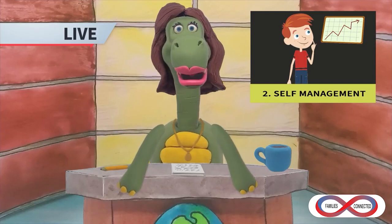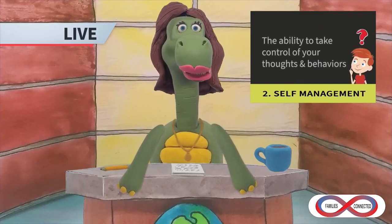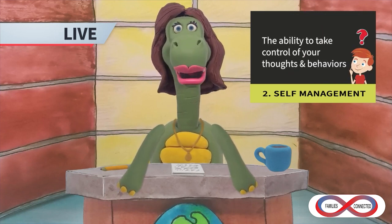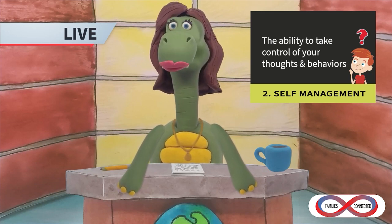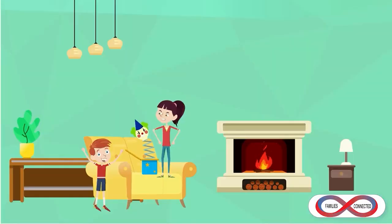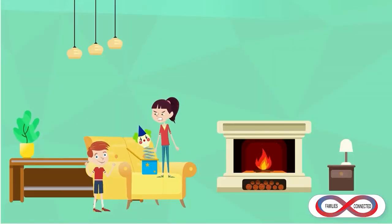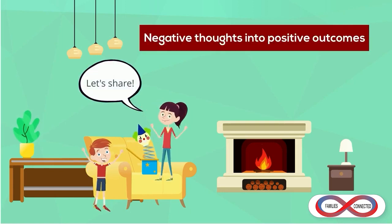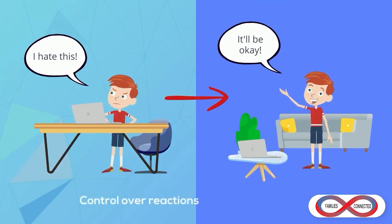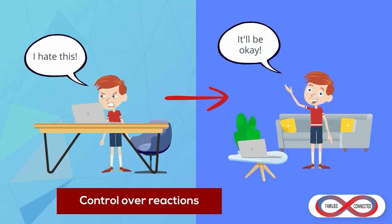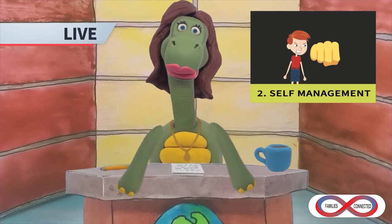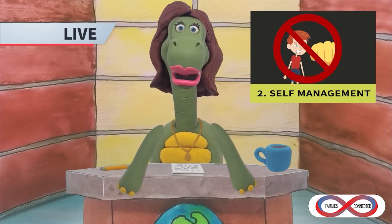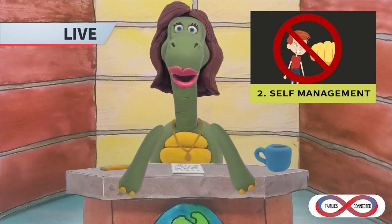Number two: self-management. Self-management is the ability to take control of one's thoughts, emotions, and behaviors — understanding who you are and how to use that information to manage feelings and reach goals. This is how your child handles themselves in any situation. This can mean changing negative thoughts to show more positive outcomes. Another part of self-management is control over one's physical reactions — creating space between emotion and the response. For example, when a child gets angry and reacts by hitting others, as they practice self-management, they can have some space to control those reactions.